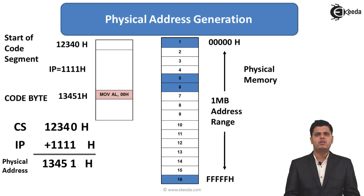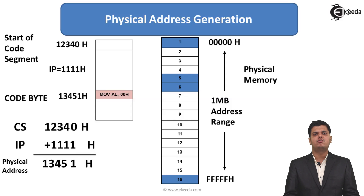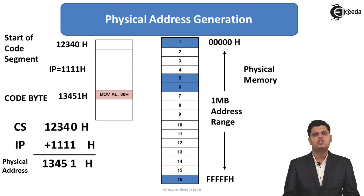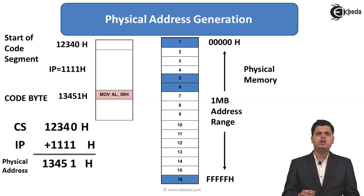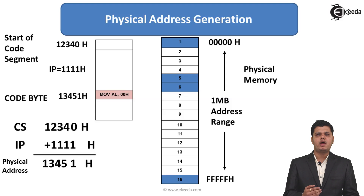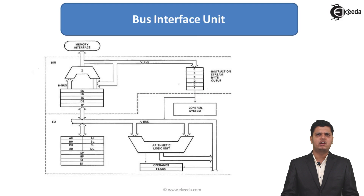So in our example, the code segment starts at 12340H and the instruction pointer is 1111H. The physical address of that instruction is 13451H. By appending 4 zero bits to the code segment register value and then adding the IP value, we obtain the actual physical address.